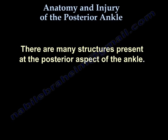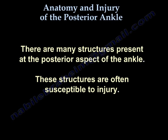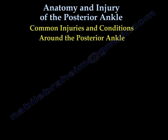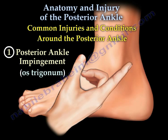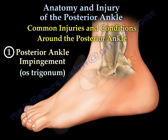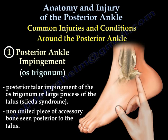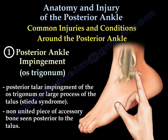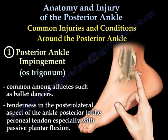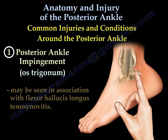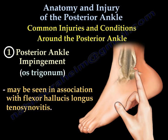There are many structures present at the posterior aspect of the ankle. These structures are often susceptible to injury. The first type is posterior ankle impingement — os trigonum — involving posterior talar impingement of the os trigonum or large posterior process of the talus. This is a non-united piece of accessory bone seen posterior to the talus, common among athletes such as ballet dancers. It is associated with tenderness in the posterolateral aspect of the ankle posterior to the peroneal tendon, especially with passive plantar flexion.